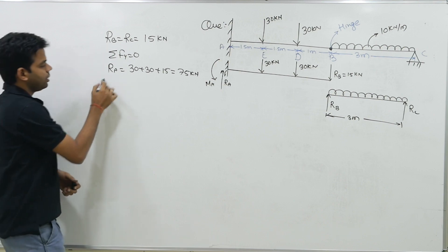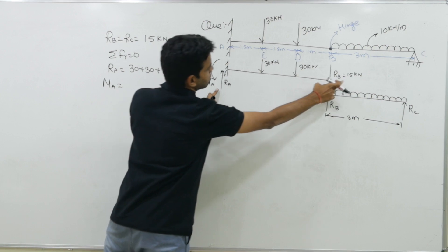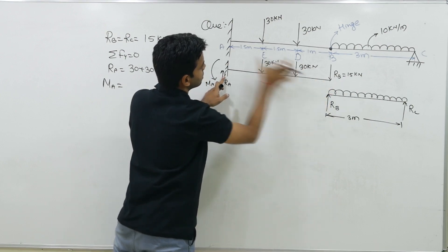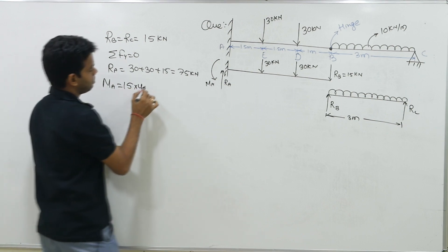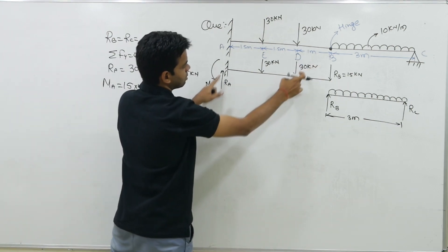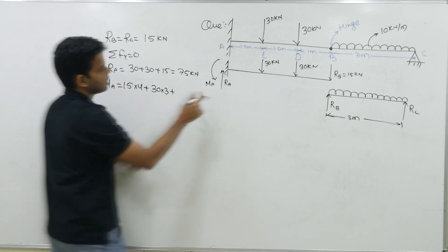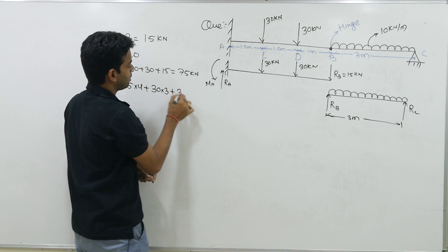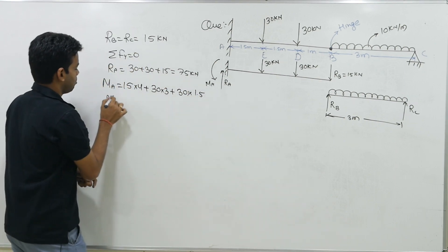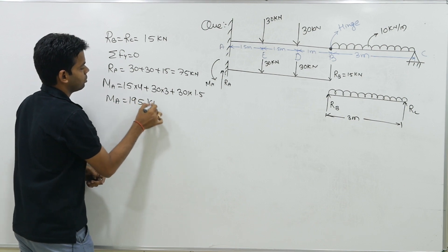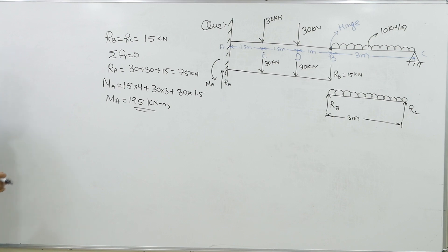Next, the moment at A. MA = 15 × 4 + 30 × 3 + 30 × 3 + 30 × 1.5, which gives MA = 195 kN·m.